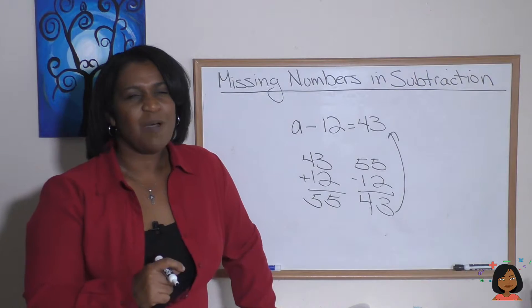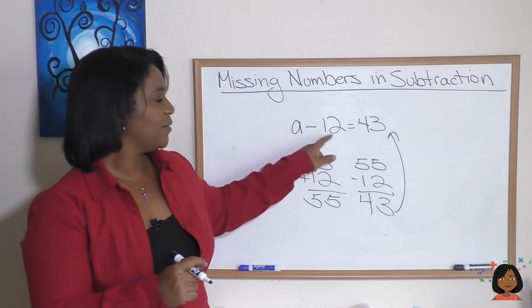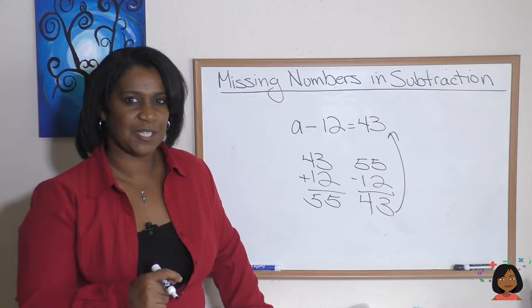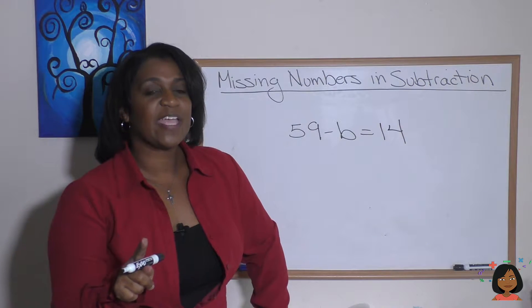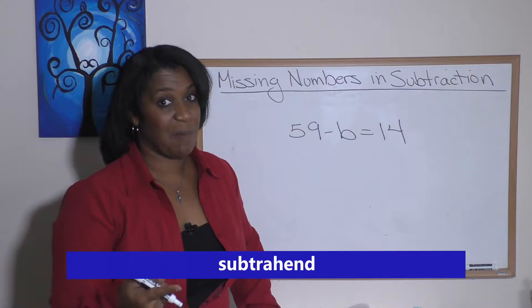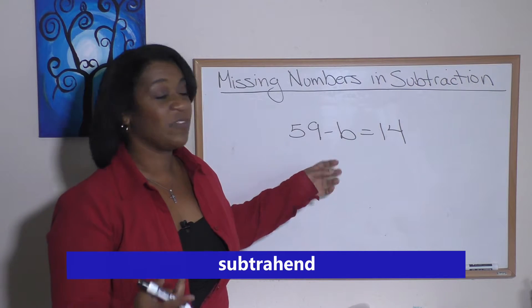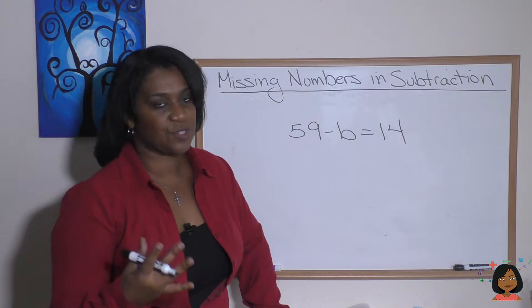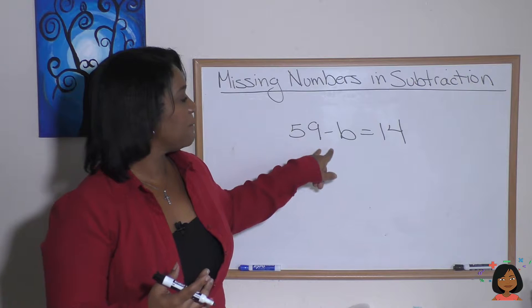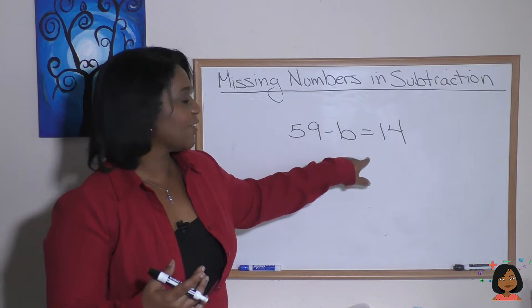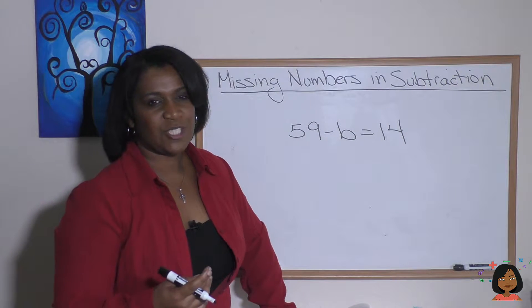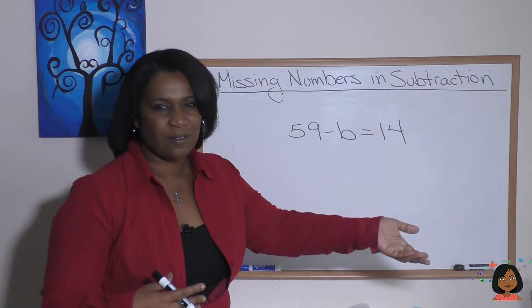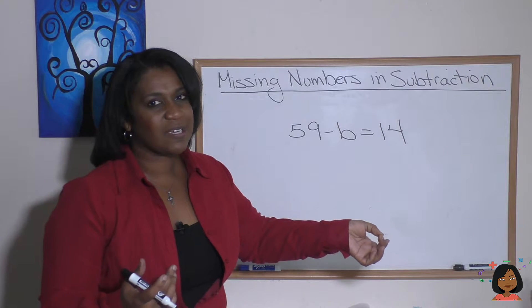But what about if you're missing the subtrahend? Hmm, let's take a look. Does this still apply if we have a missing subtrahend? Remember, subtrahend is the amount that we are subtracting from our minuend. Well, let's think this through. 59 minus some number is going to give us 14, so it doesn't really make sense that we would add these numbers—that'll give us a bigger number, and that's not going to work.